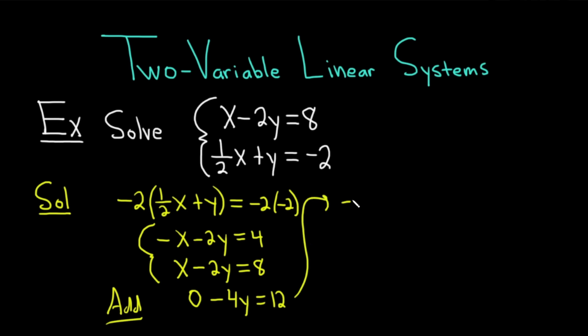So you end up with negative 4y equal to 12. And then you can divide by negative 4. Divide by negative 4. And then you get y equals negative 3.